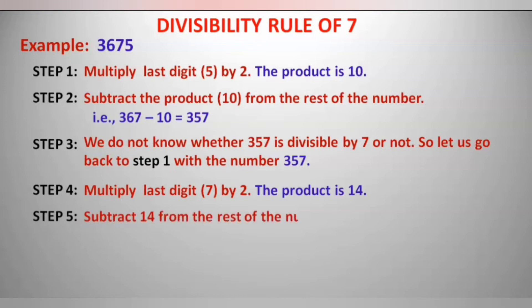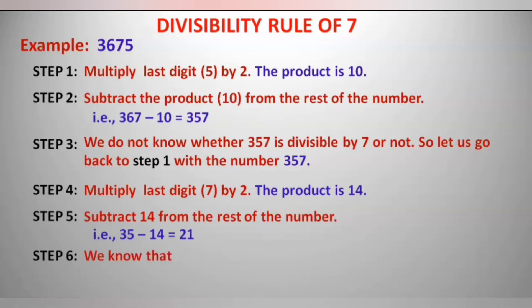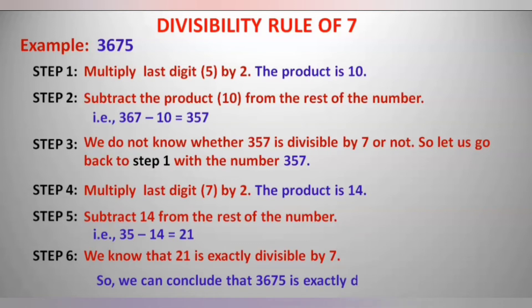Other than 7, the remaining number is 35. So 35 minus 14 gives 21. We know that 21 is exactly divisible by 7, so we can conclude that our number 3675 is exactly divisible by 7. Let us check with another example in a simple and fast way.